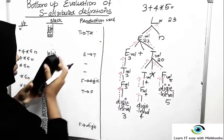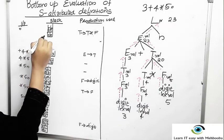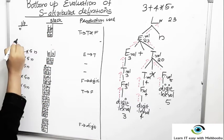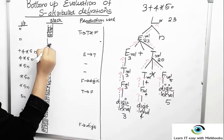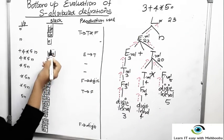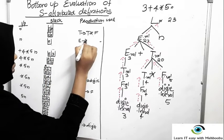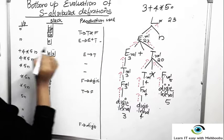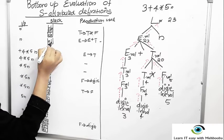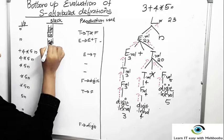Now E plus T can be replaced by E using production E gives E plus T. The value is 3 plus 20 = 23. We now have E with value 23 on the stack. We then shift N onto the stack, giving us E with value 23 followed by N.